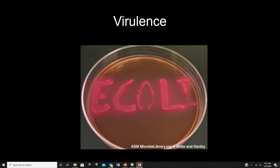Virulence describes how ill a particular pathogen can make you, or how likely it is to make an otherwise healthy person sick. Normal E. coli has very low virulence — it lives in everybody's intestines without causing harm. But the strain E. coli O157:H7, which produces Shiga toxin, has much higher virulence and can make an otherwise healthy person very sick. Different strains can have different virulence levels.